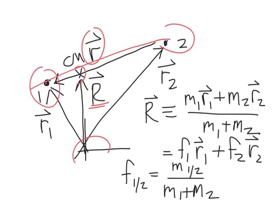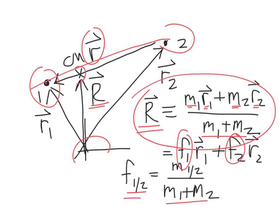The position of the center of mass — capital R — as you may recall from chapter three, is given by mass one times its position vector plus mass two times its position vector, divided through by the total mass of the system. You can rewrite that by defining F1 and F2, which are the fraction of the system's mass in M1 and M2 respectively. So capital R represents the mass-weighted average position for the two particles in the system.